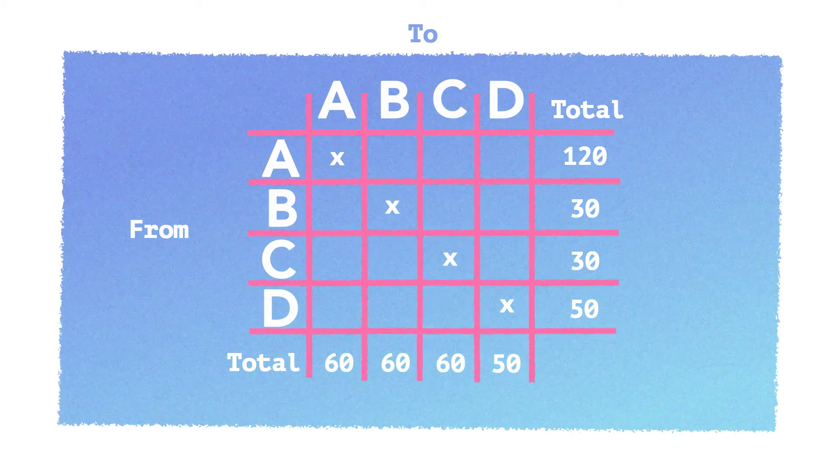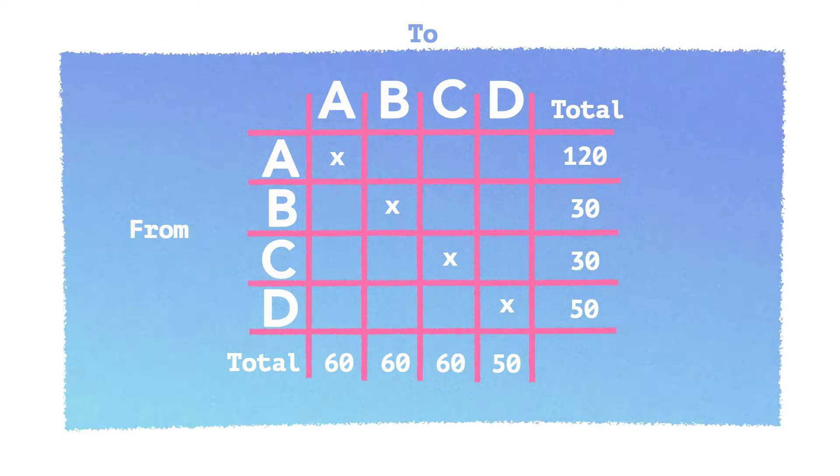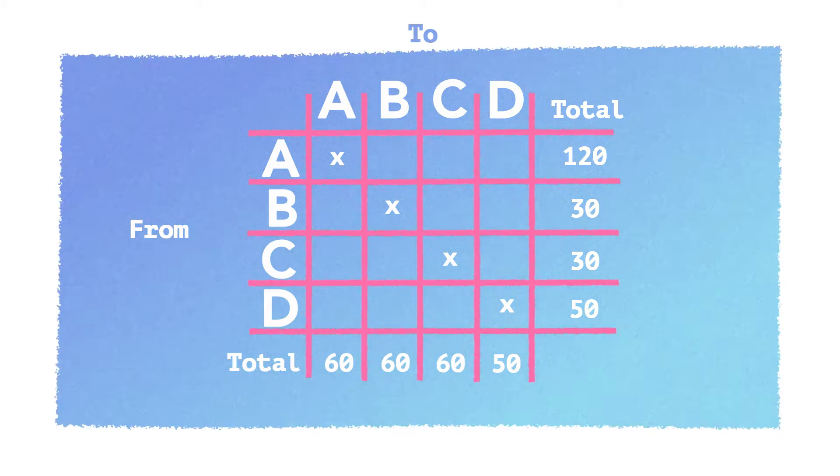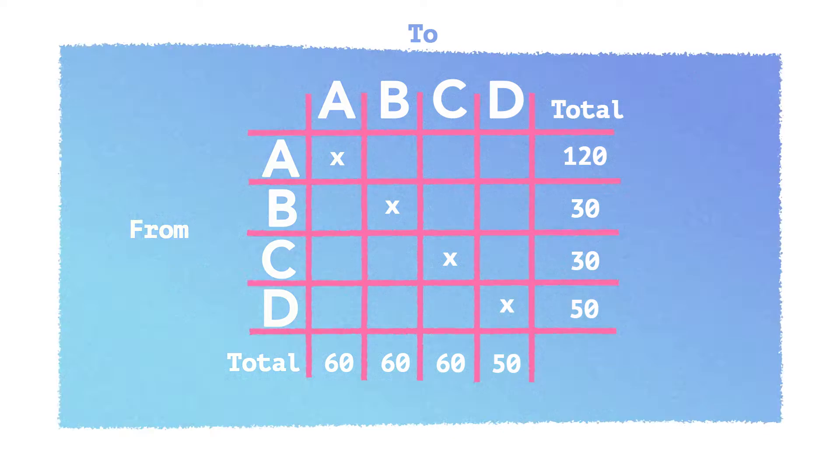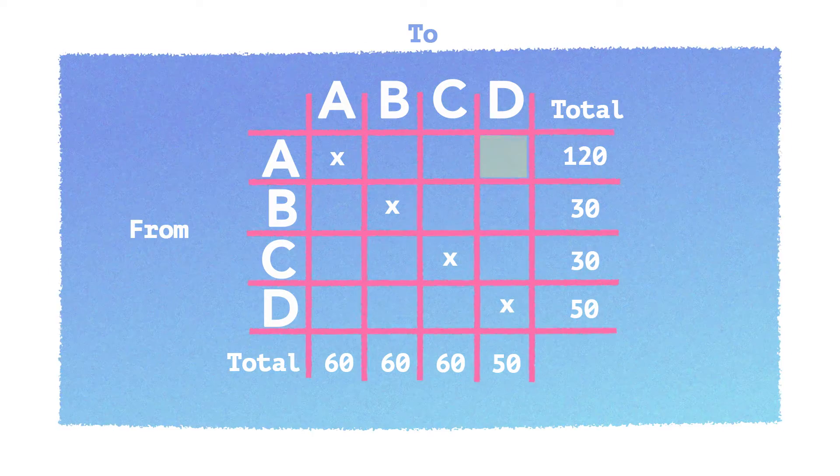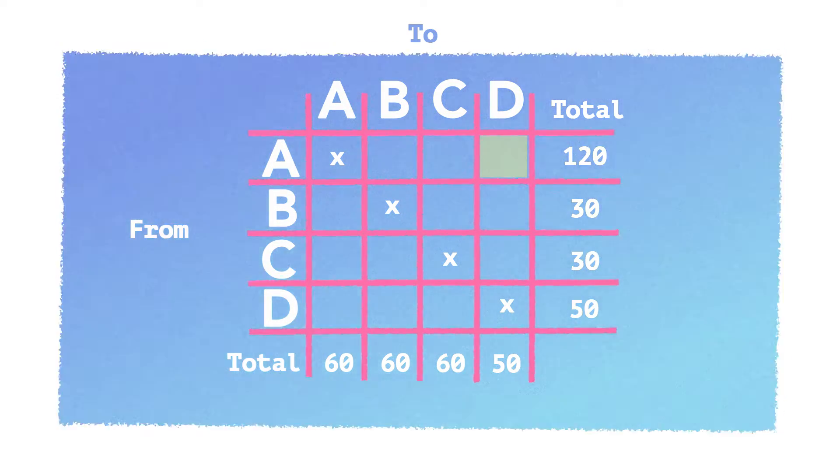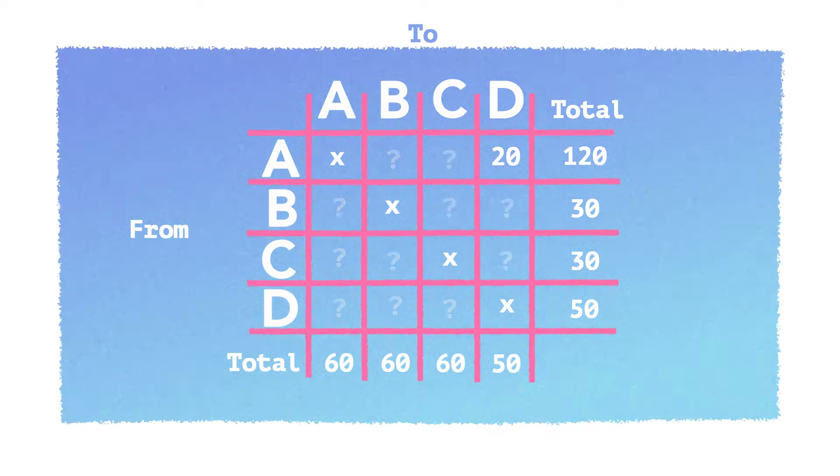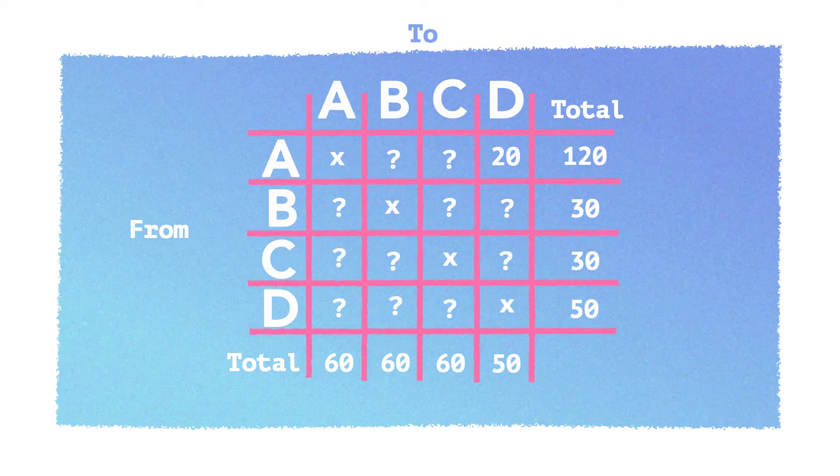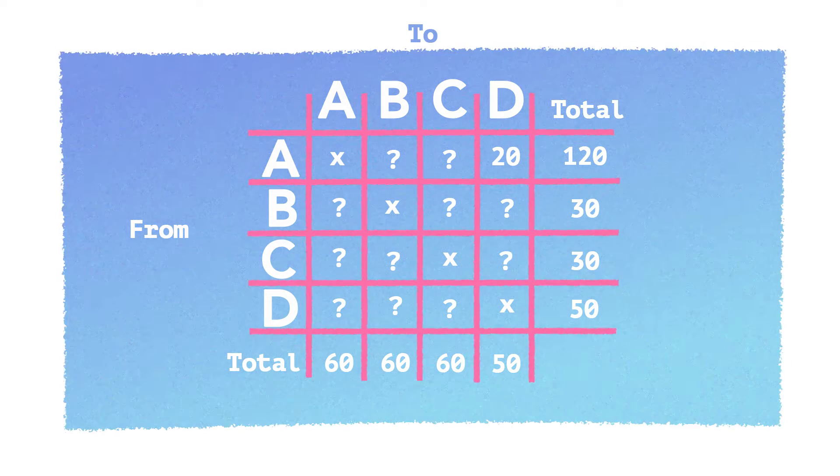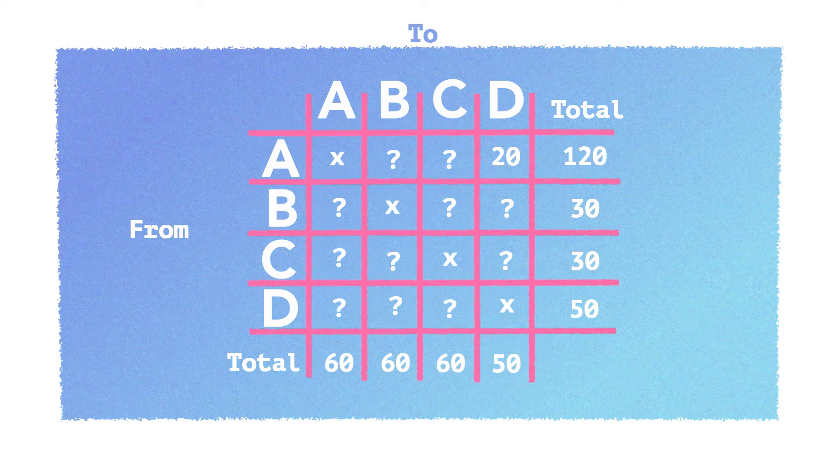What you can also think about is some of these turns on here are what's called known movements. So from A to D, that is in junction one. There is only one turn that does that. It's known. That is 20. Maybe you, Hannah, could think about some other known movements. And go step by step and you might be able to fill in the whole grid.